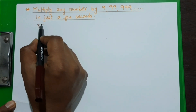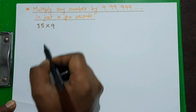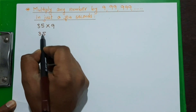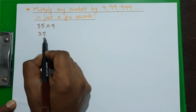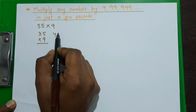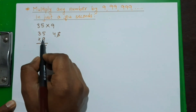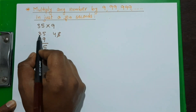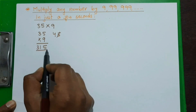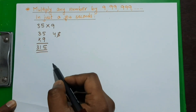Let's take the number 35 and multiply it by 9. Generally, what we do is multiply 35 by 9 like this: 9 fives are 45, we write 5 and carry over 4, then 9 threes are 27 plus 4 is 31. In this way we get our answer using the usual method.